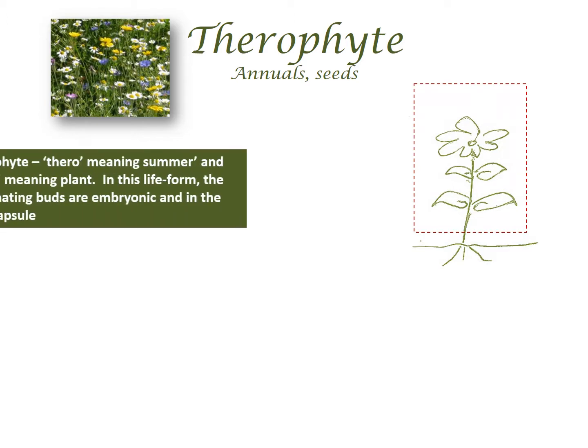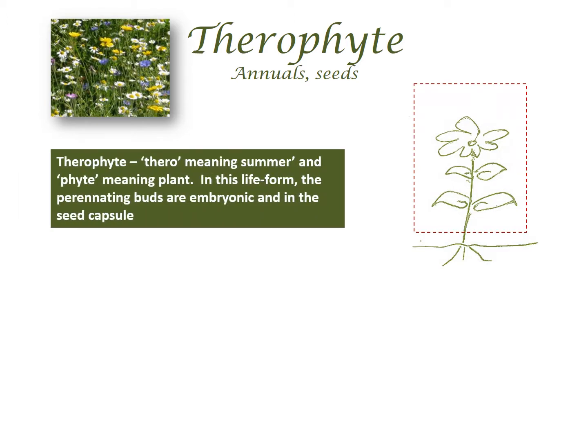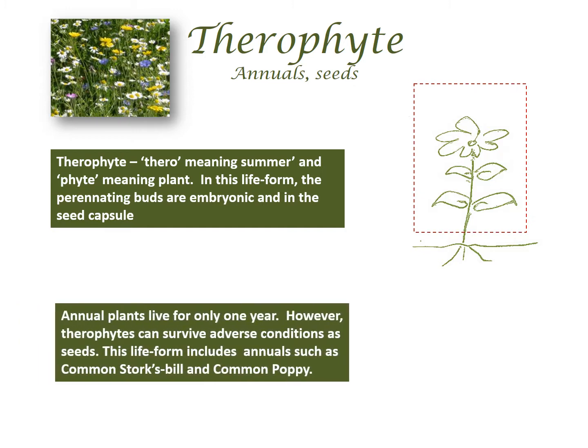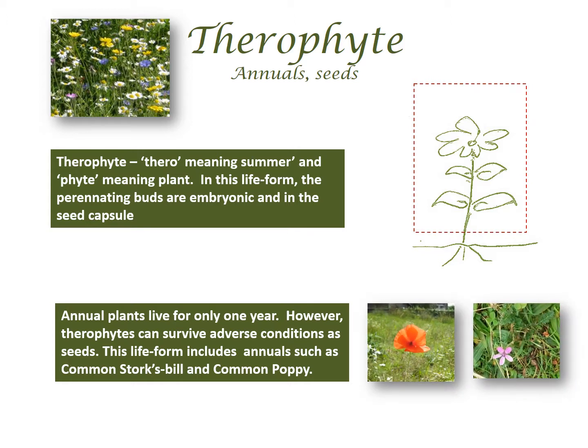Therophyte — thero meaning summer and phyte meaning plant. In this lifeform, the perennating buds are embryonic and in the seed capsule. Annual plants live for only one year; however, therophytes can survive adverse conditions as seeds. This lifeform includes annuals such as common stork's-bill and common poppy, among others.